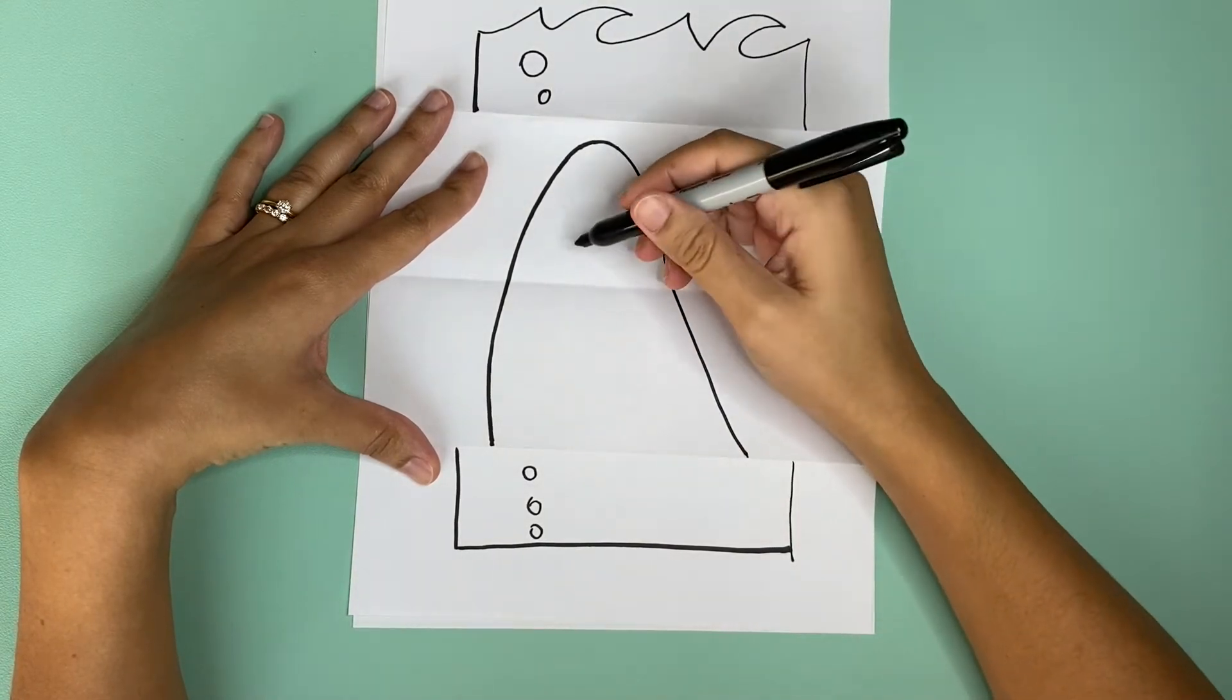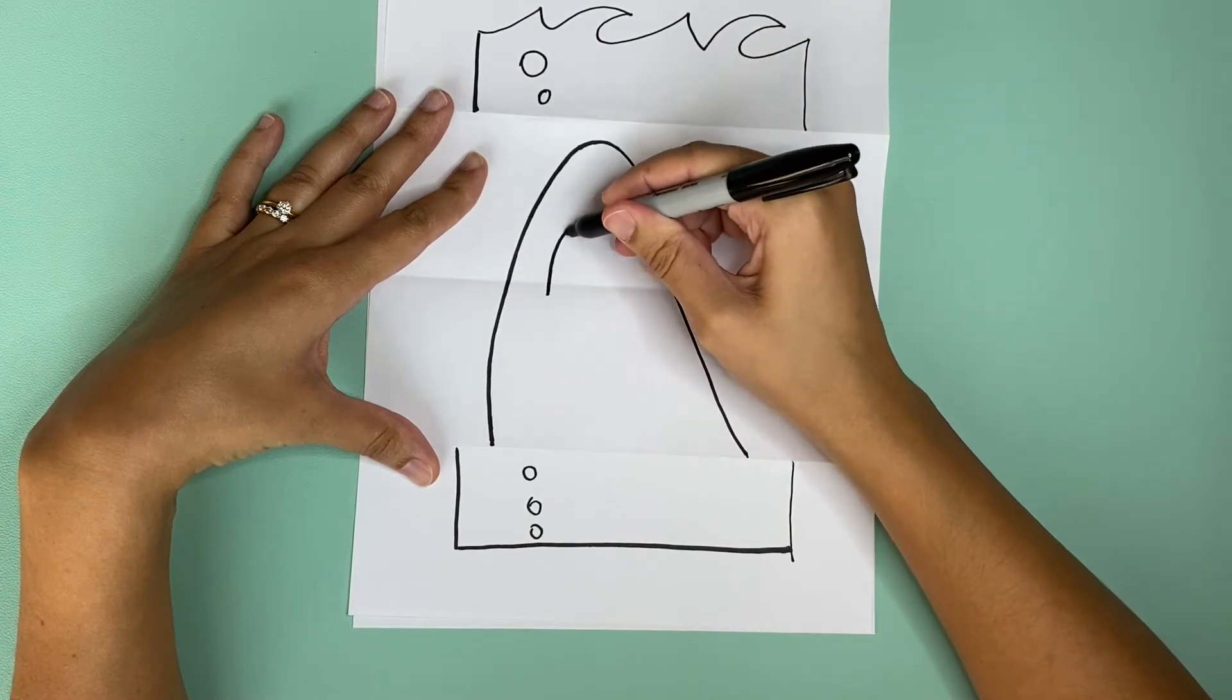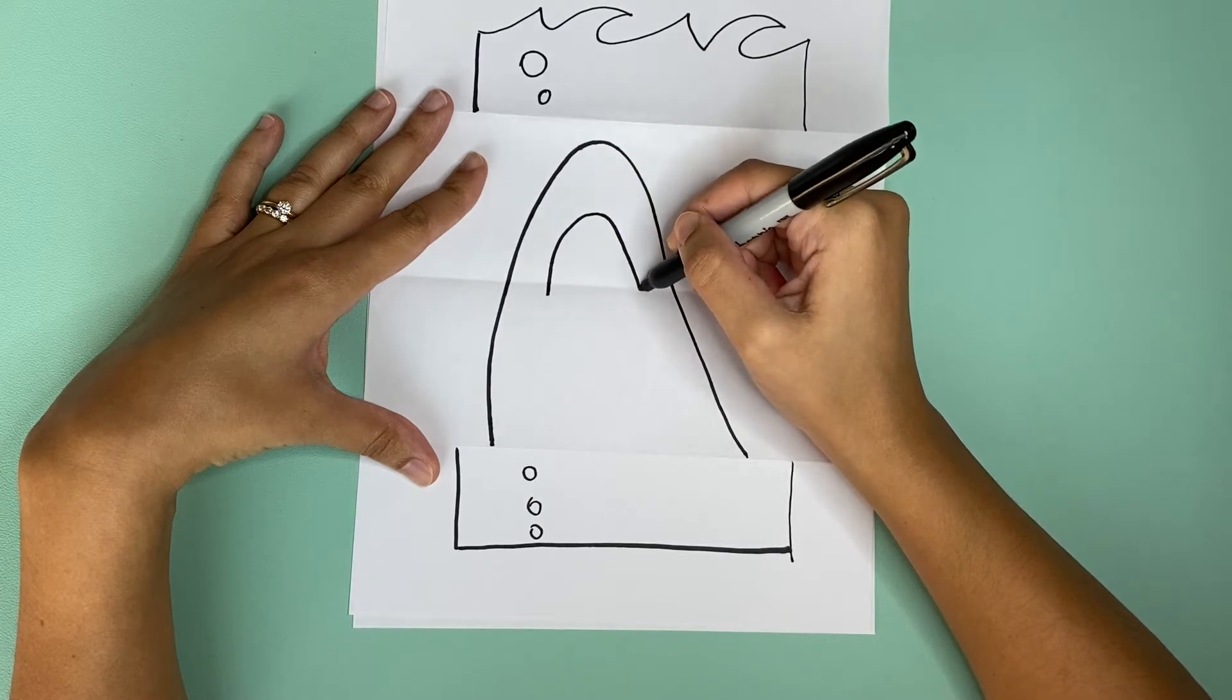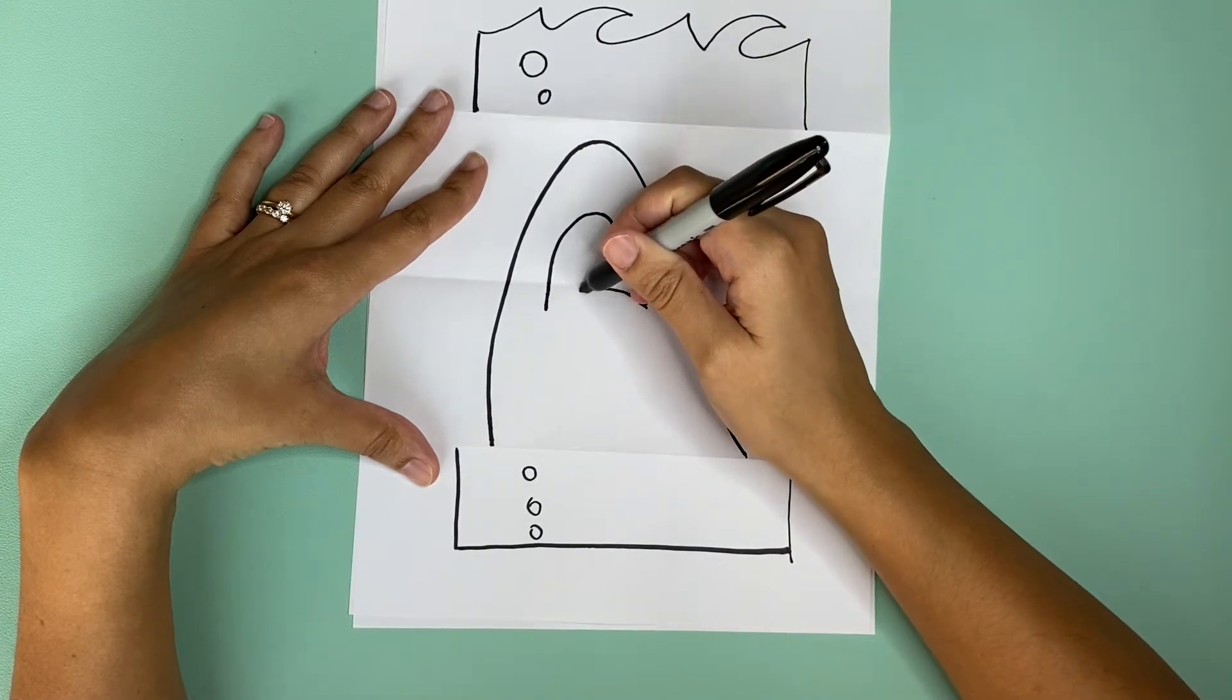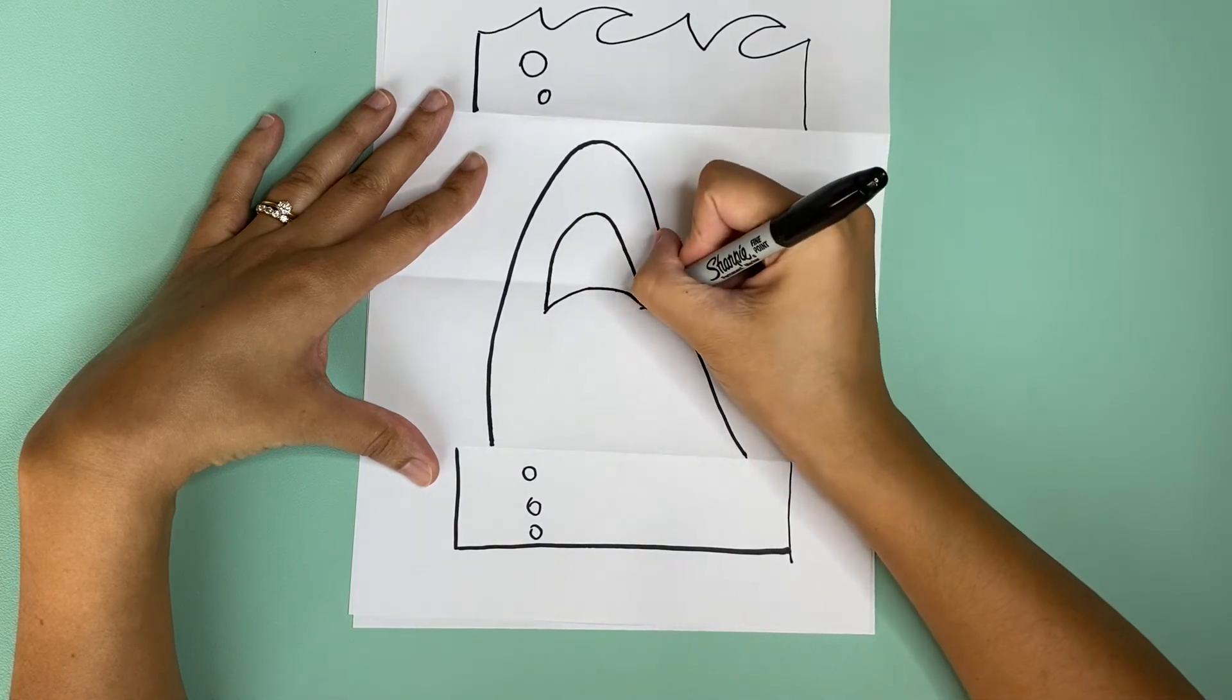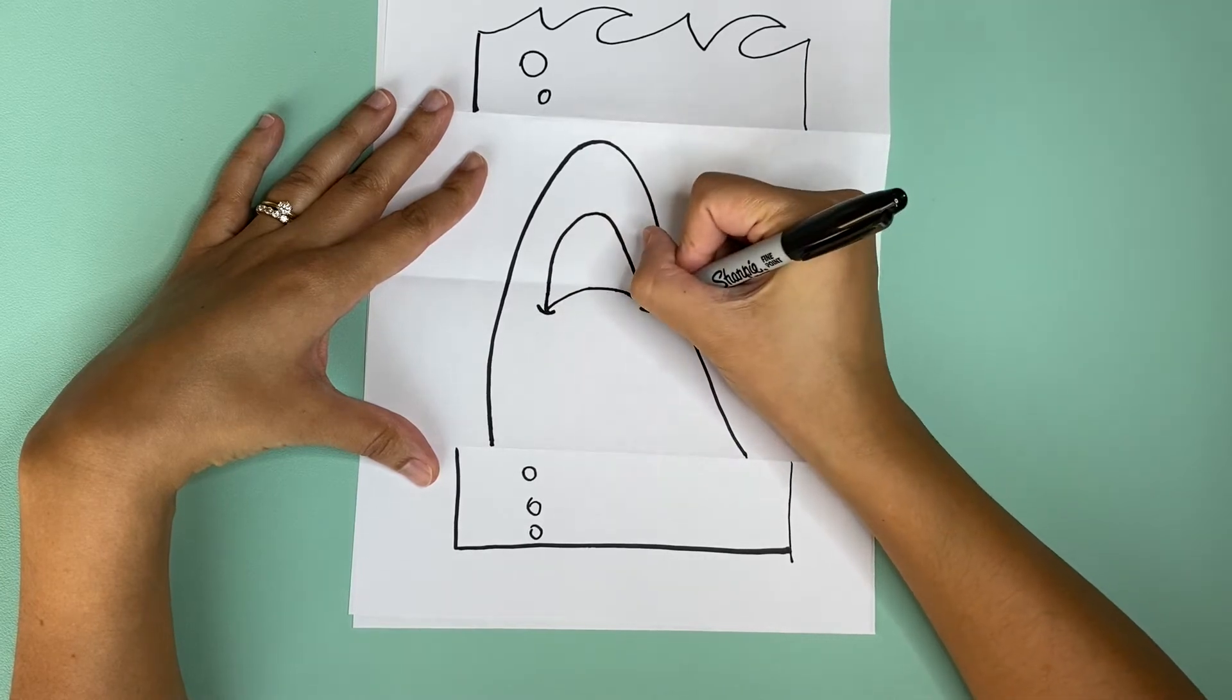We're going to make the shark's teeth in the middle. First we need to make a curve for the mouth going down and then we're going to make a line going across that's curved. We're going to make two end points here that curve.